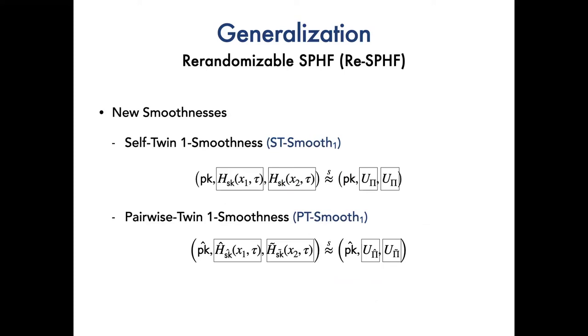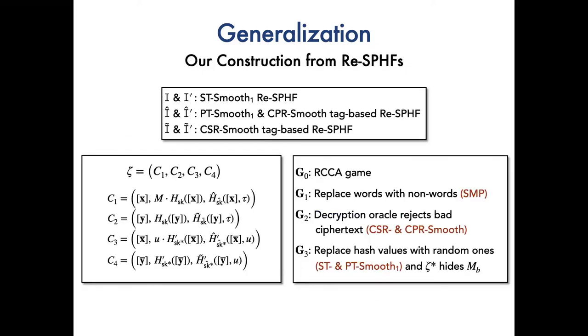Meanwhile, we also define two new smoothness. ST smooth 1 means that conditioned on fixed pK for two random non-language elements x1 and x2 and random tag tau, their hash values are uniformly distributed over the space pi, pi hat and pi tilde together respectively. For example, our construction is based on six different RESPHFs. We now show how to realize RCCA security and the receiver anonymity with those new smoothness.